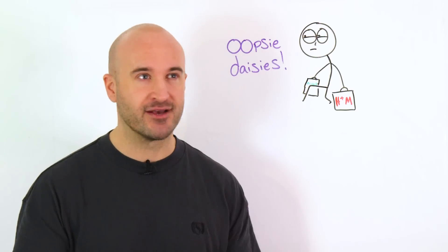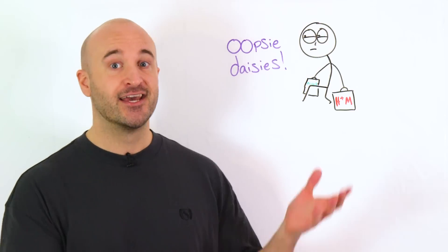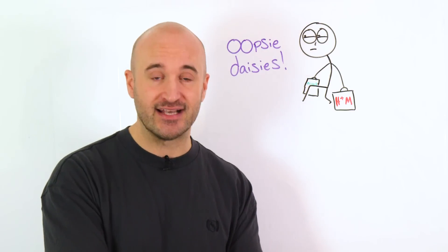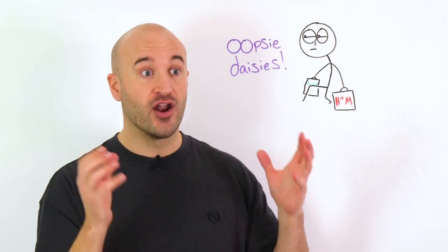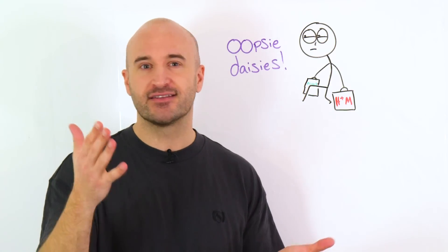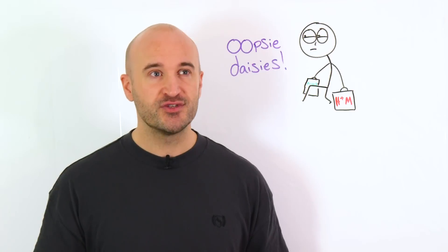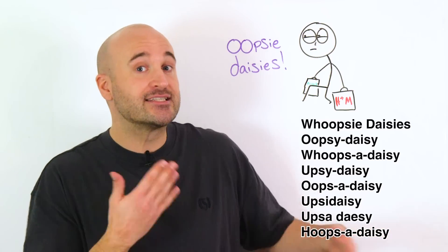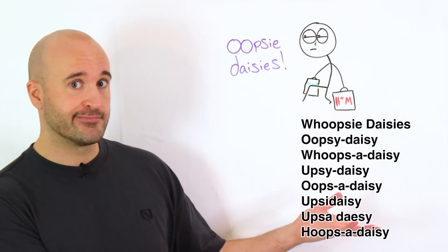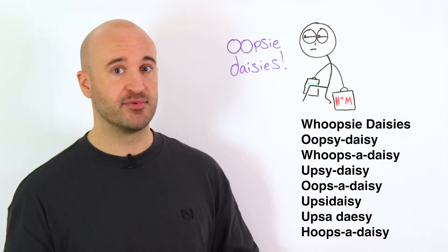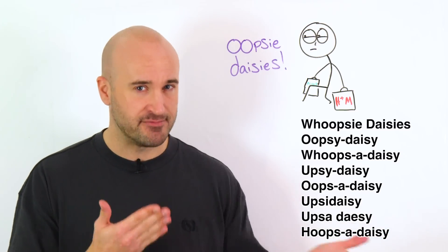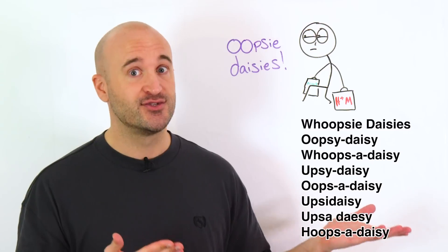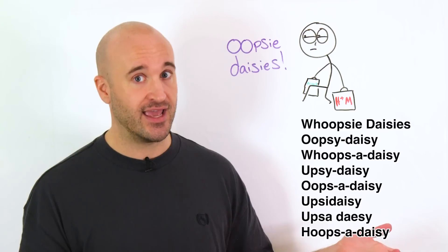So when you make a mistake, you do something silly, this is what a child might say, or what you might say to a child. Like a, oh no, but in a child way. Also, there are so many ways to spell this. Yeah, all of these are acceptable and there's no one true way to spell this. So again, don't worry.